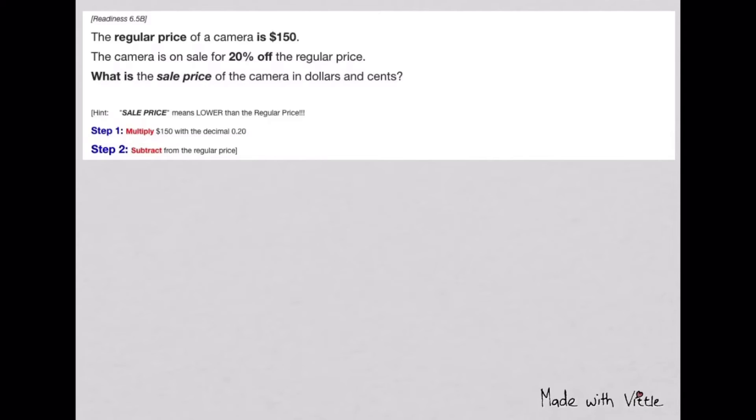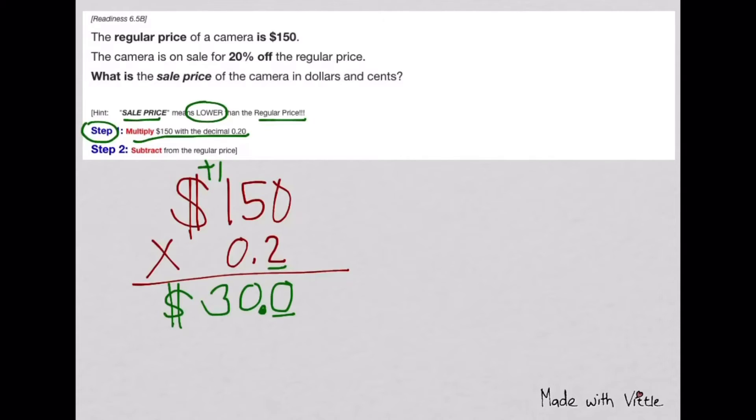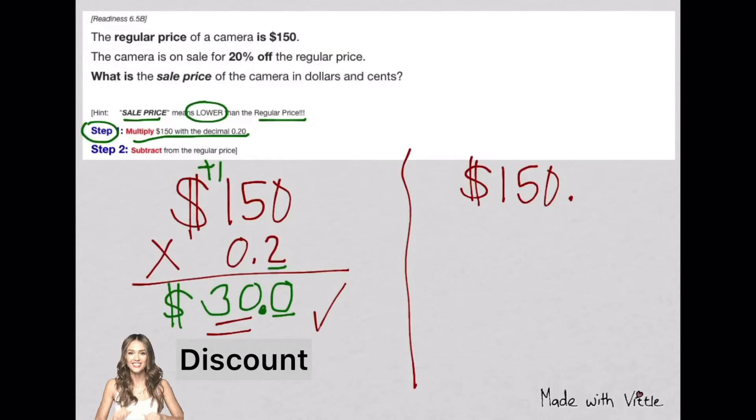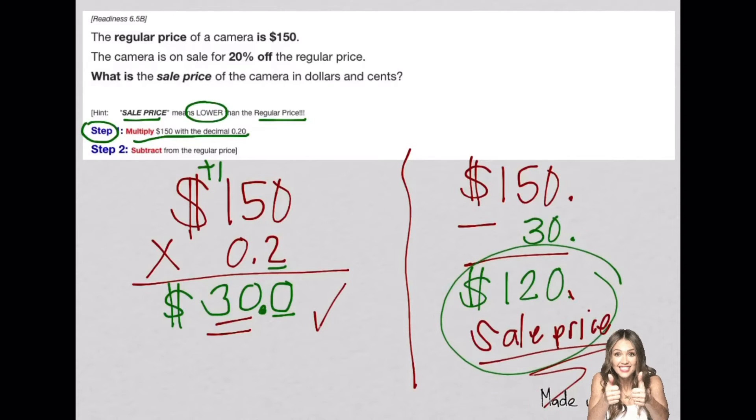The regular price of a camera is one hundred fifty dollars. The camera is on sale for twenty percent off. Step one, multiply the regular price with the decimal form of the given percent. You got thirty dollars as the discount, so you don't have to pay for that. Therefore, subtract it from one hundred fifty dollars to get the sale price of one hundred twenty dollars.